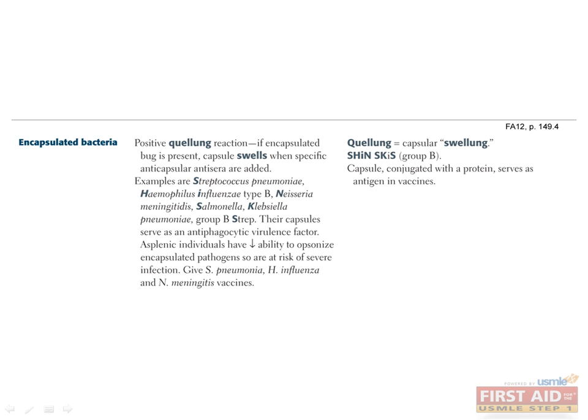Encapsulated bacteria are covered by an outer capsule made of polysaccharides. These bacteria can be highly virulent because the capsule protects them from phagocytosis and T cell-mediated immune responses. People who lack a spleen, anatomically or functionally as in sickle cell disease, are highly susceptible to sepsis by encapsulated bacteria. Asplenic patients should receive vaccination against these organisms, and those with B cell deficiencies are also at increased risk. Use the mnemonic 'SHINSKI's' to remember the encapsulated bacteria: Streptococcus pneumoniae, Haemophilus influenzae type B, Neisseria meningitidis, Salmonella, Klebsiella pneumoniae, and group B Strep.